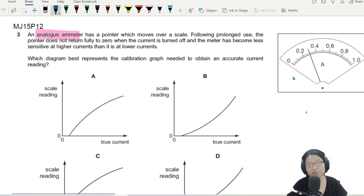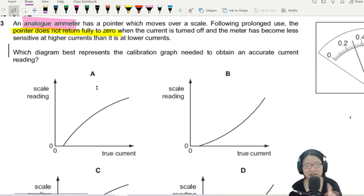But this one is a uniform scale. So following prolonged use, after much use and abuse, the pointer does not return fully to zero. When the current is turned off, the meter has become less sensitive.